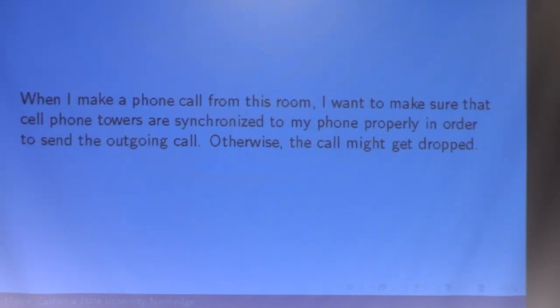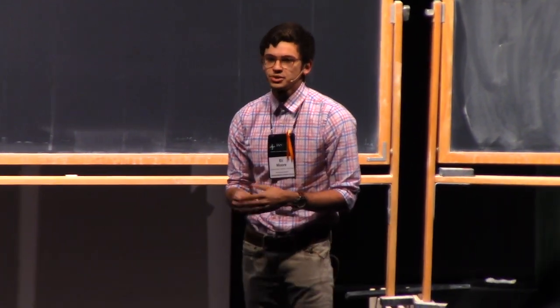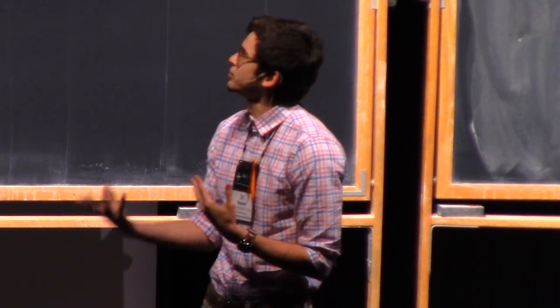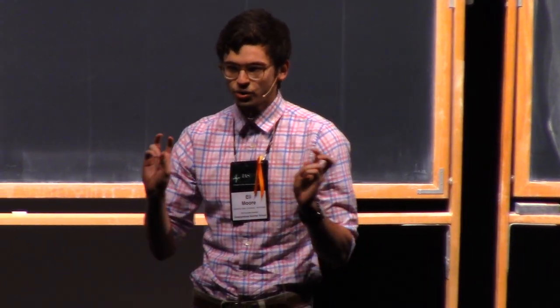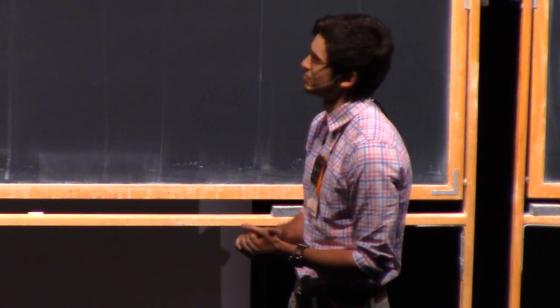As a quick example, when I make a phone call from this room, I want to make sure that the cell phone towers are synchronized well to my phone in order to send the outgoing call. Otherwise, the call might get dropped. I'm going to be calling this autocorrelation soon, but I'll define that in a few slides.